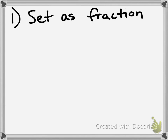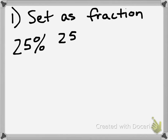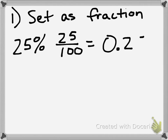Method number one: set the percent as a fraction. You might remember from our other percent video that if I have 25%, I can always write that as a fraction out of 100 — so 25 over 100. And we know that 25 out of 100 is equal to the decimal twenty-five hundredths. So one way to move from a percent to a decimal is to recognize this relationship: 25% equals 25 out of 100, which can be written as twenty-five hundredths.